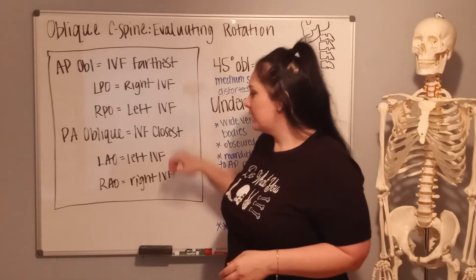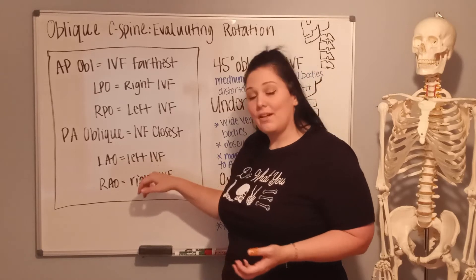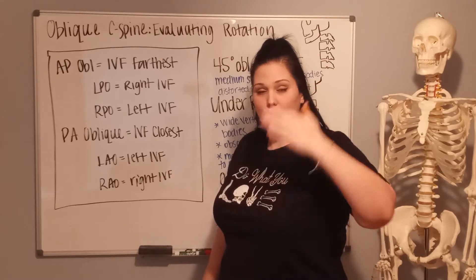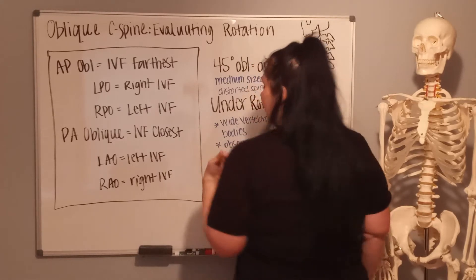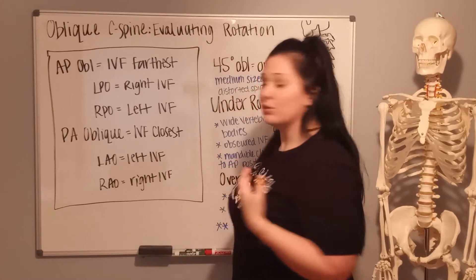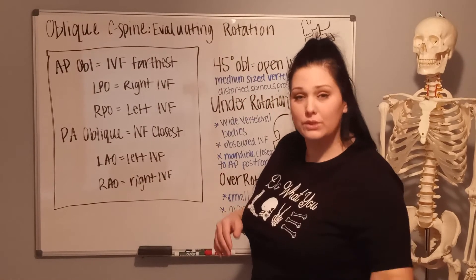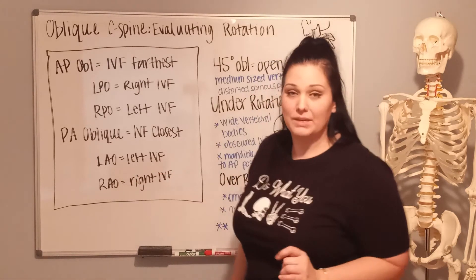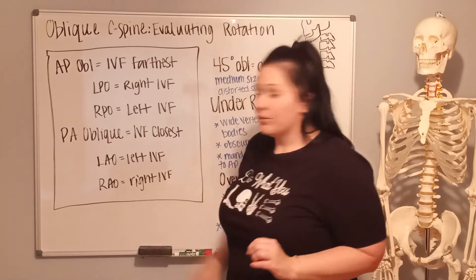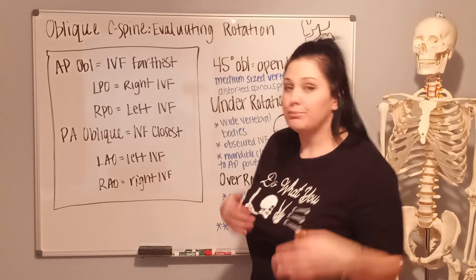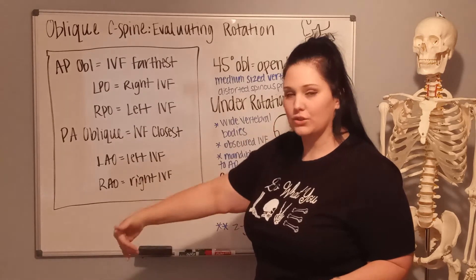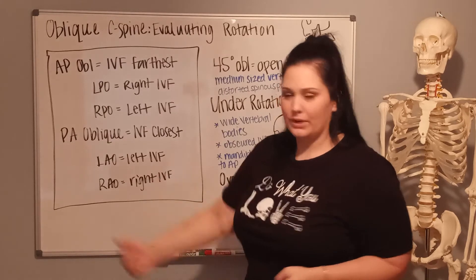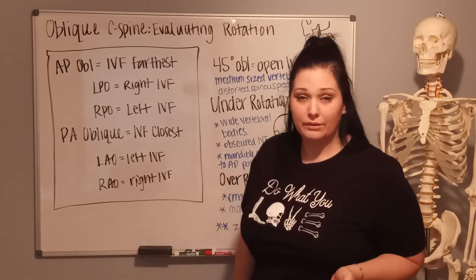In PA oblique, you are going to see the IVF closest. In LAO, the left side of the patient's body with the anterior surface — the front of them — touching the IR. In that scenario, since you're looking for the IVF closest to the image receptor, in LAO you're going to see your left IVF. For RAO, you're still in PA with the right anterior side touching the IR, so you're going to see the right IVF because the right side is against the board — closest to the IR.